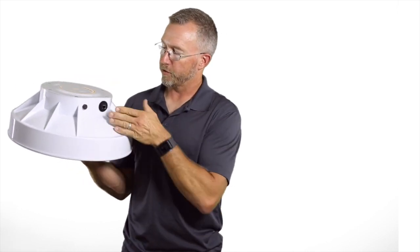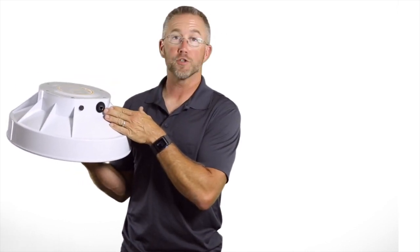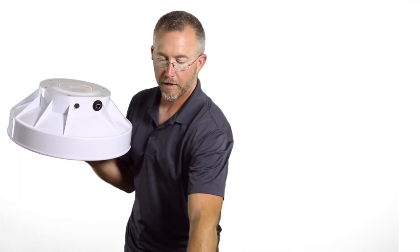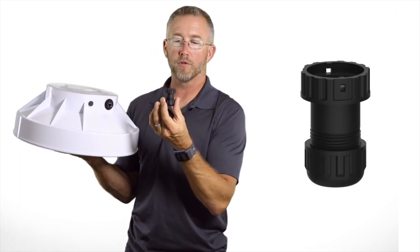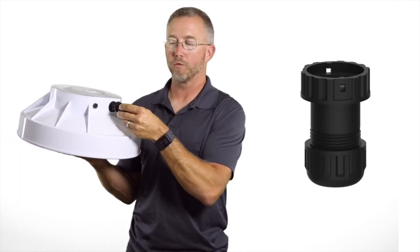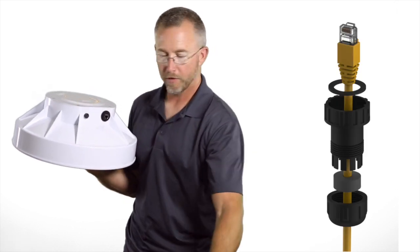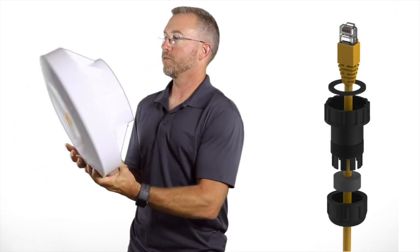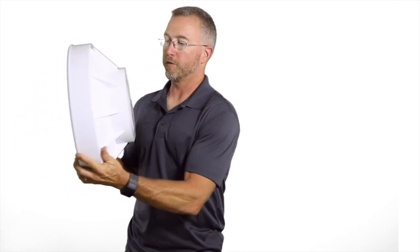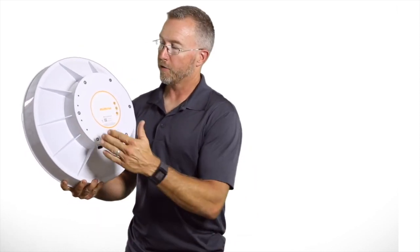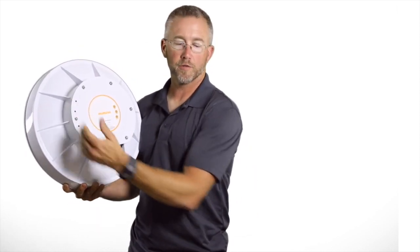The base of the unit, as you can see, has the connection for the Ethernet and it has a very nice durable boot that covers up the bottom when you do the cable attachment. And then the mounting position for the bracket is to this face of the antenna.